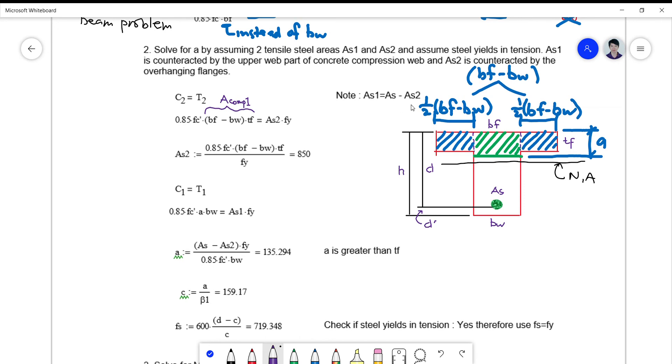This one, (BF - BW) times TF multiplied by the stress 0.85 f'c prime must be equal to AS2 times fy, assuming that the steel in tension yields. So for the solution of AS2, we simply cross multiply or arrange it, and we get now a value of AS2 equals 850 square millimeter.